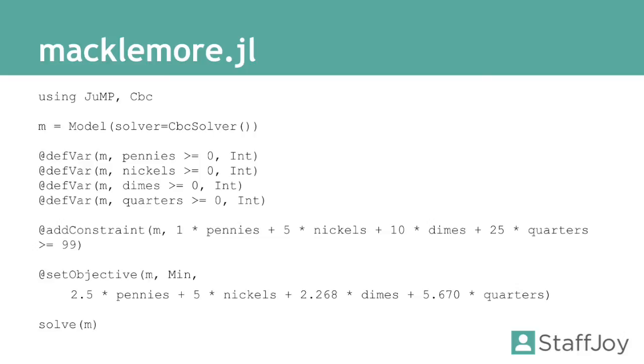Then we add the constraints that we need to carry at least 99 cents. We basically multiply each variable times the value of the currency in cents. We say it needs to be greater than or equal to 99 cents.